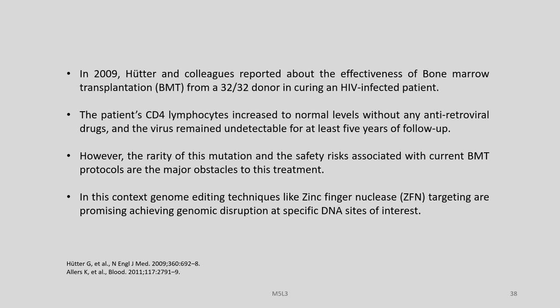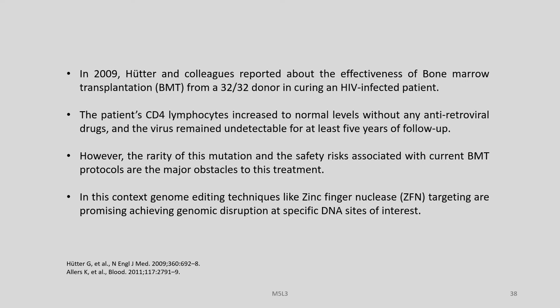Around 2009, Hutter and colleagues reported the effectiveness of bone marrow transplantation from a homozygous del32 donor in curing an HIV infected patient, which became a breakthrough. People are now trying to create this kind of deletion by genome editing. In this case, the patient's CD4 lymphocytes increased to normal levels without any antiretroviral drugs and the virus remained undetected for at least 5 years of follow-up. However, the rarity of this mutation and the safety risks associated with bone marrow transplantation protocols are major obstacles, and genome editing techniques like zinc finger nucleases are promising alternatives for disrupting the CCR5 delta32 sequence.